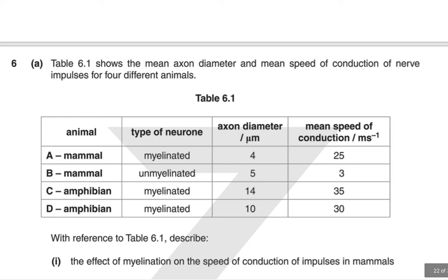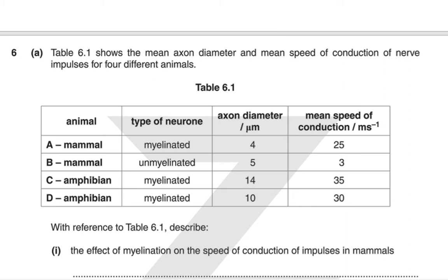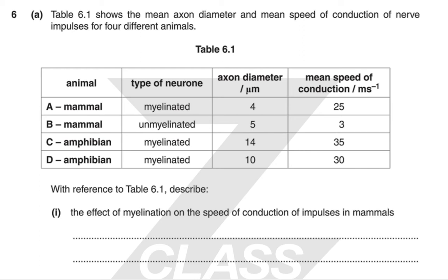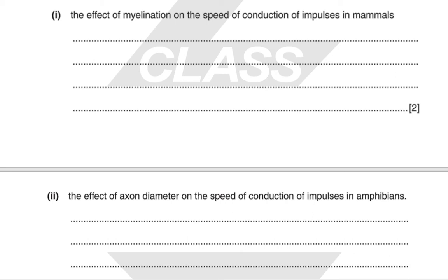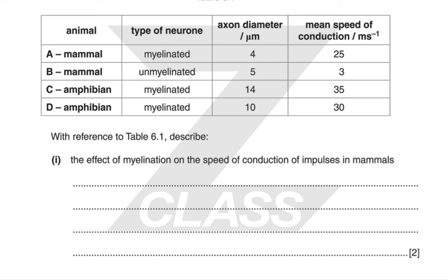Table 6.1 shows the mean axon diameter and mean speed of conduction of nerve impulses for four different animals. Describe the effect of myelination on the speed of conduction in mammals. Animals A and B are both mammals with similar axon diameters, but A is myelinated and B is unmyelinated. There is a drastic difference in conduction speed: 25 versus 3. For the effect of axon diameter in amphibians, animals C and D are both myelinated but have different axon diameters — D is 10 and C is 14 — and there is a corresponding increase in speed of conduction from 30 in D to 35 in C.